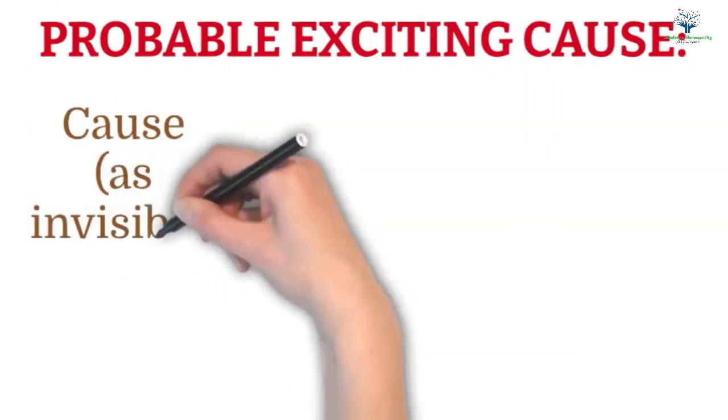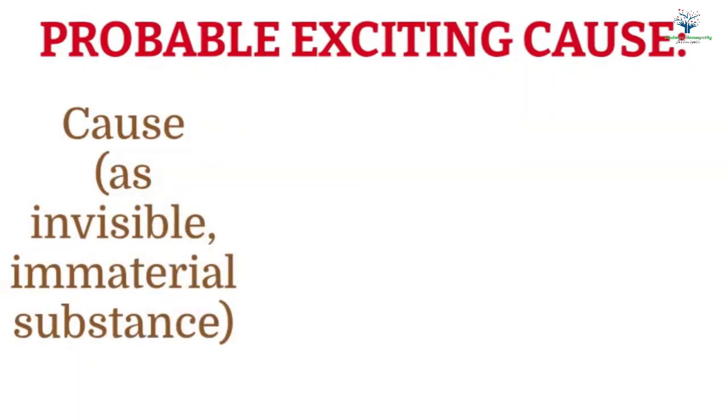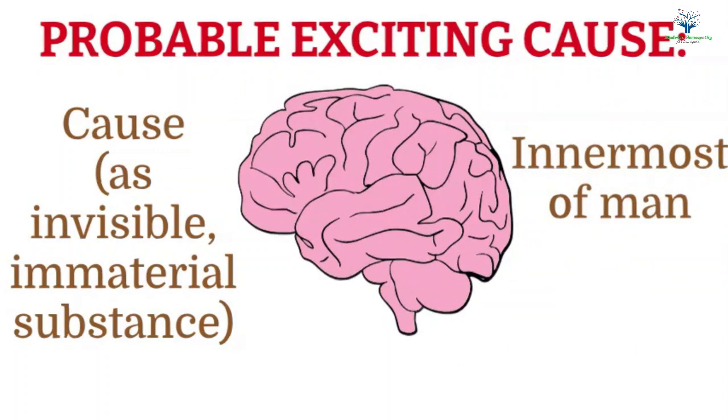It is the influx of the cause as an invisible immaterial substance to the organism. It first acts upon the innermost of man and then flows from center to periphery.